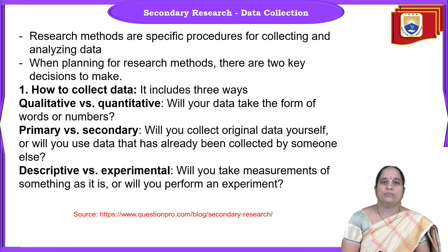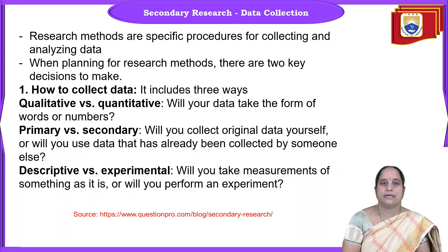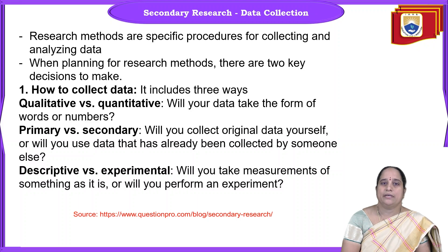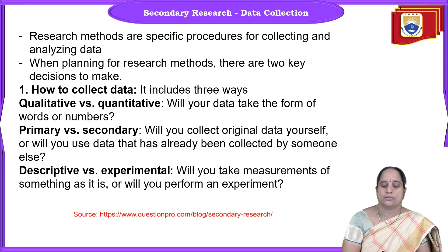Coming to the second type — primary or secondary. Primary means whenever you are going to collect first-hand information directly from the respondents, that type of data is known as primary data. Secondary data is that which is already readily available; it might have been collected by someone else, and that type of data you are going to use for your research study. That type of source is known as secondary data sources.